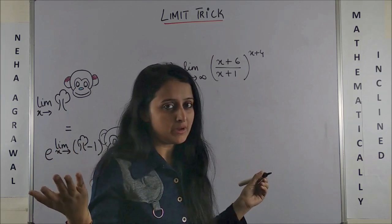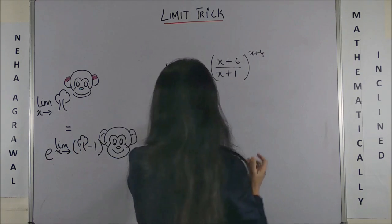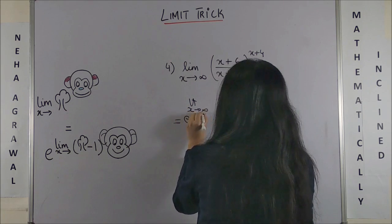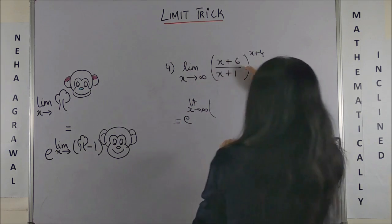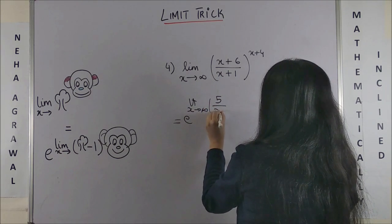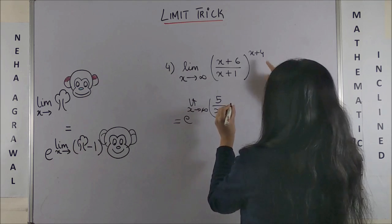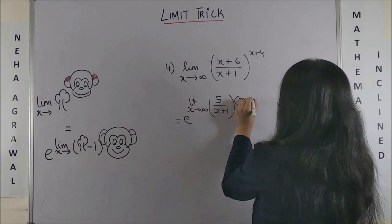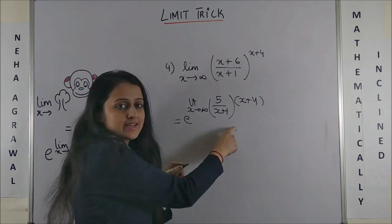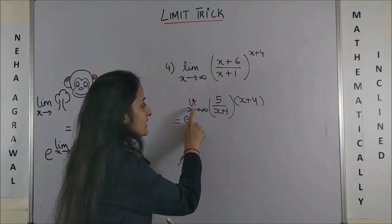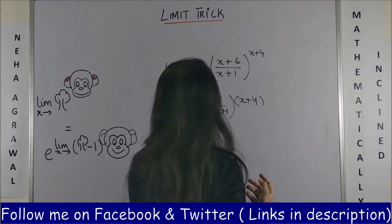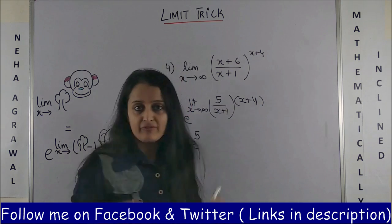Again, our super monkey to the rescue. This would be e to the power limit extending to infinity. And here if I subtract, I'll be left with only 5/(x+1), and my monkey comes down. This would be x+4. So now this would be 5x+20, this is x+1. Once again you see this is limit extending to infinity, same degrees, so the answer is simply e to the power 5. Bingo.